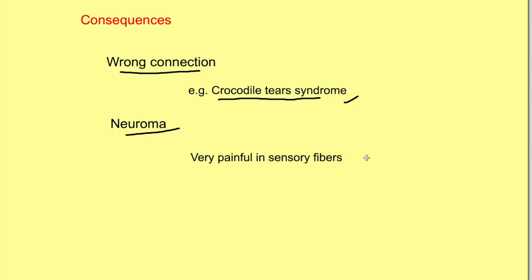That covers nerve injury — the classification, the changes which occur, the consequences, and the prognosis of different types of nerve injury. Thanks for watching; if you liked it, do press the like button, share the video, and don't forget to subscribe to the channel Physiology Open.